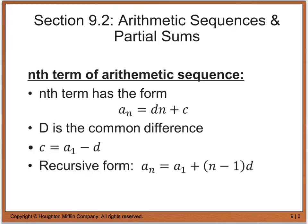The nth term of an arithmetic sequence has the form a sub n is equal to d times n plus c. Now, d is what we call the common difference. So if I have numbers that are continuously separated by a constant term, that constant term would be the common difference, or d. We can solve for c by taking our first term and subtracting d. I did give you the recursive form as well, but we'll get into that after we do our first example.